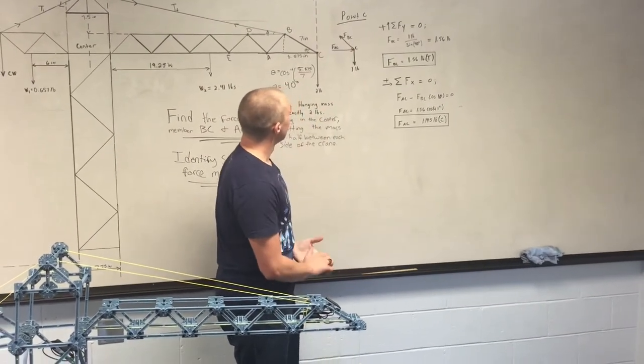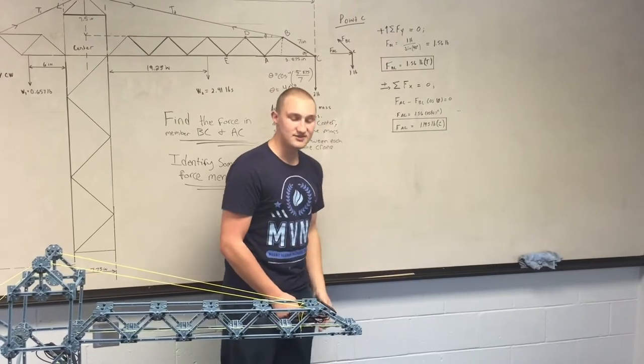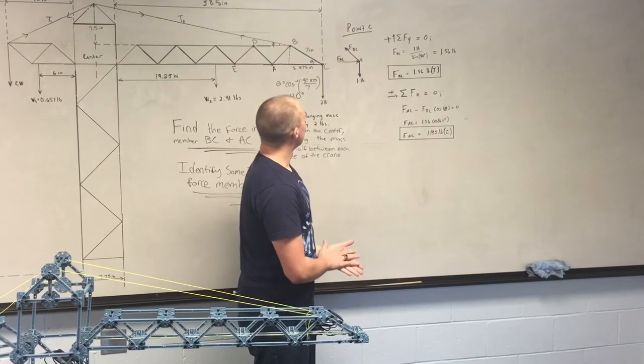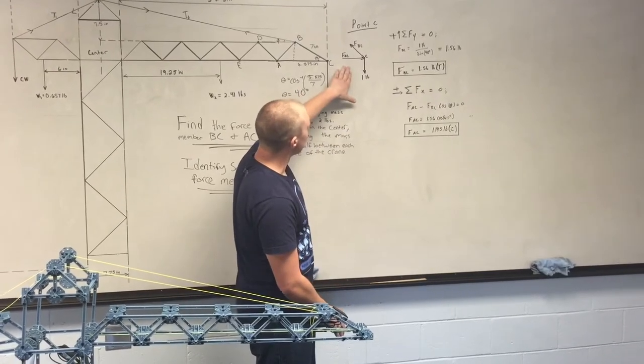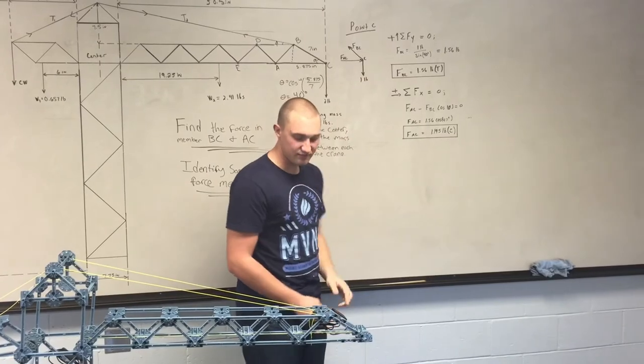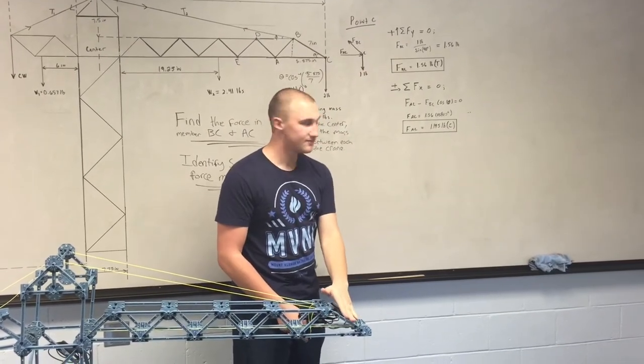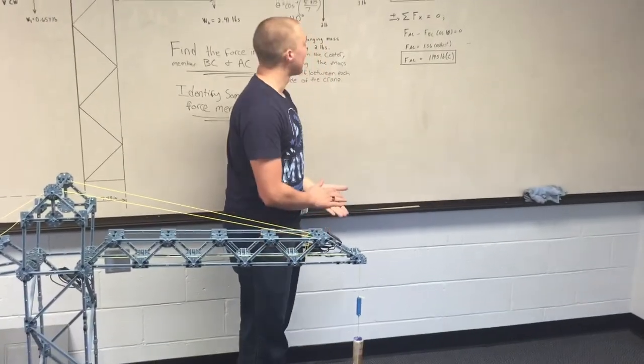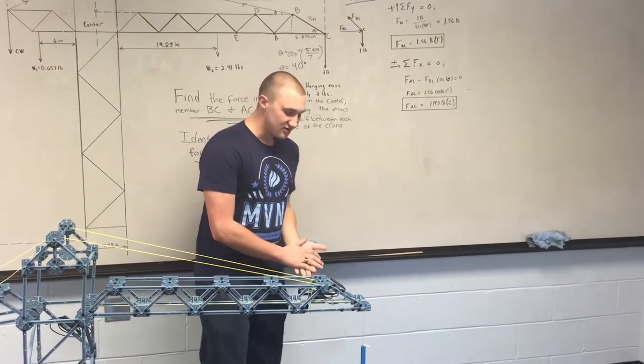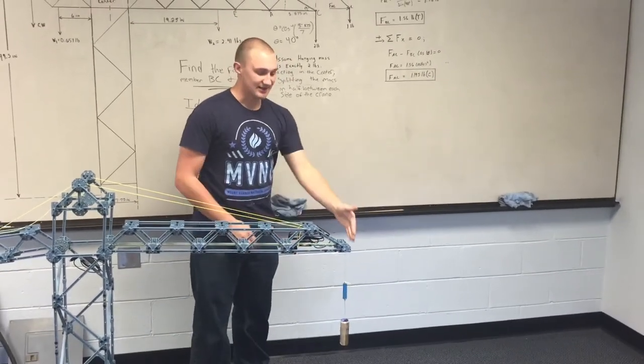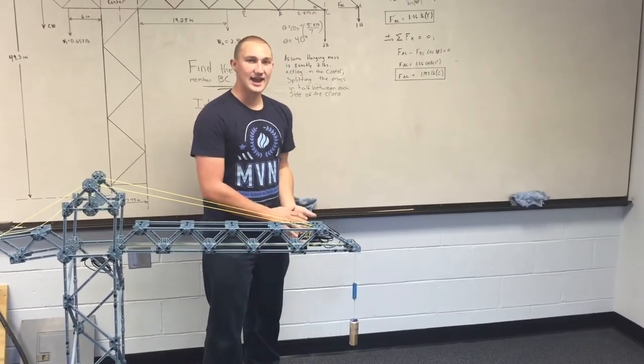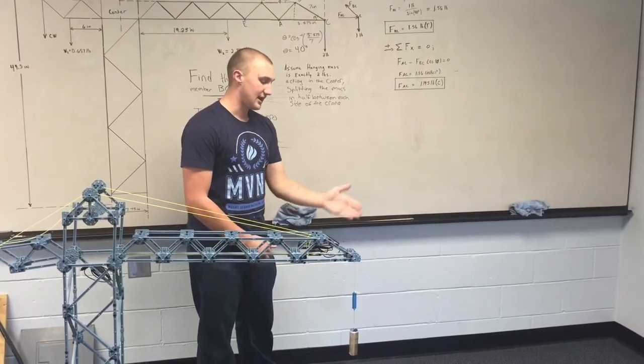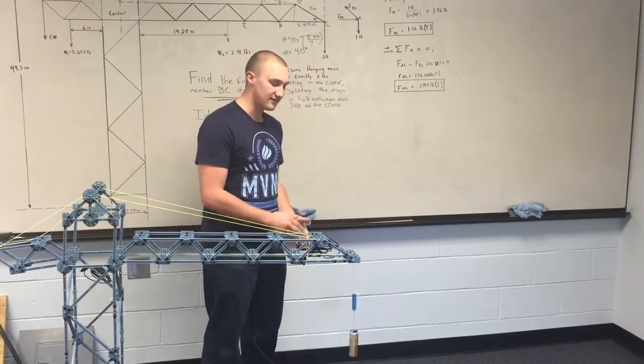So to do that, we can look at point C and we can analyze it. We can take the sum of the forces in the y direction, which would be up in this case, to be zero. When we look at this diagram here, we know that there's a y component of FBC, which is this member, and then there's the force acting downward from our mass that is hanging. We assume that this mass is halved because we assume that it is equally in the middle, and that half is acting on this backside and the other half of it is acting on the front side.